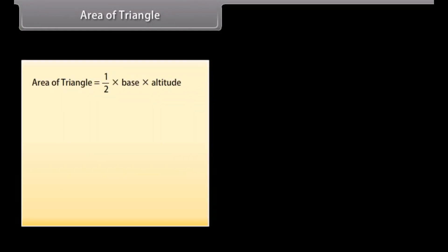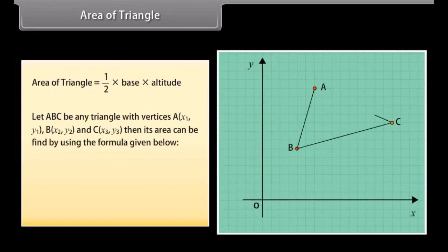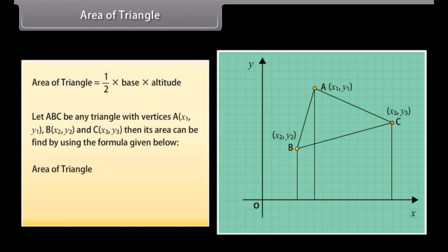Area of triangle: In earlier classes, when the base and altitude of a triangle are given, we find its area using the formula: Area equals one-half times base times altitude. Let A, B, C be any triangle with vertices A(X1, Y1), B(X2, Y2), and C(X3, Y3). Then its area can be found using the formula: Area of triangle equals one-half times the absolute value of [X1(Y2 minus Y3) plus X2(Y3 minus Y1) plus X3(Y1 minus Y2)].